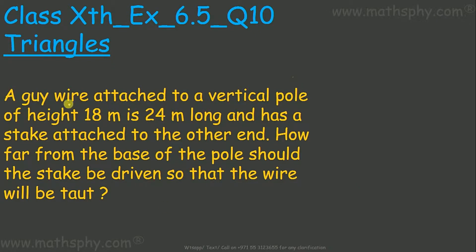This question here: a guy wire attached to a vertical pole of height 18 meters is 24 meters long. This guy wire is 24 meters long, attached to a pole which is 18 meters high, and has a stake attached to the other end. One of the ends of this wire is attached to the other end of this pole.